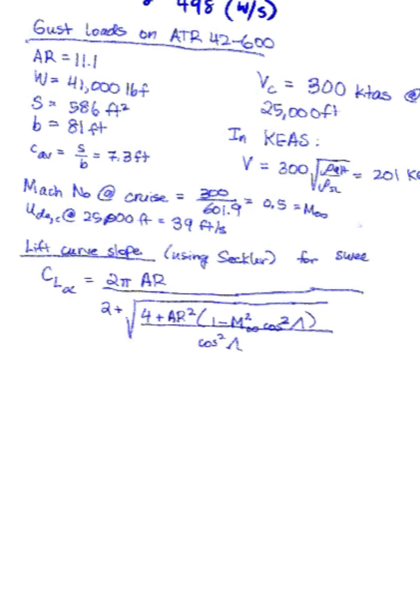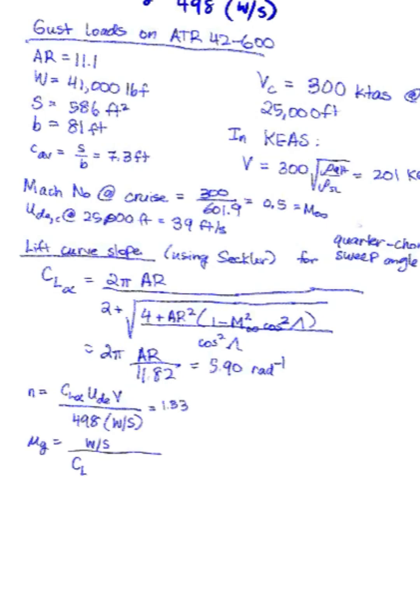So we want to calculate our lift curve slope. Some people just do 2 pi. And this is the equation I like to use. It's a SECOR's equation, takes into account the sweep and also the Mach number. I think this is pretty good for transport aircraft. And so now we get our load, which is about 1.33. And then mu G is 42.5. KG is about 0.78.